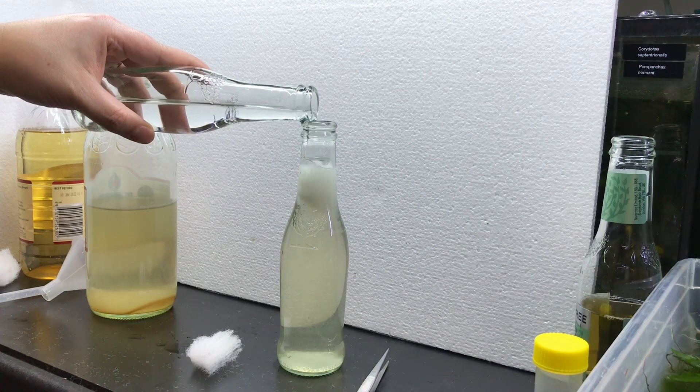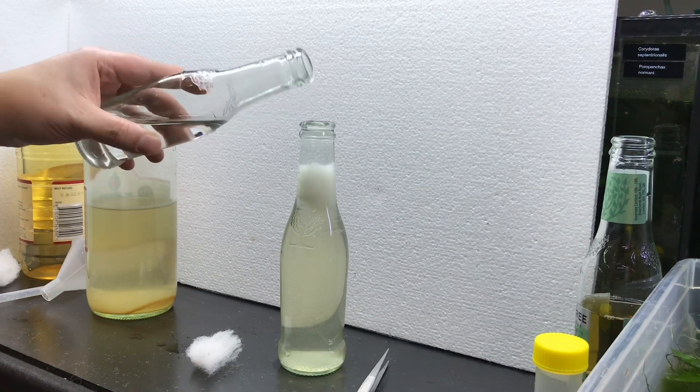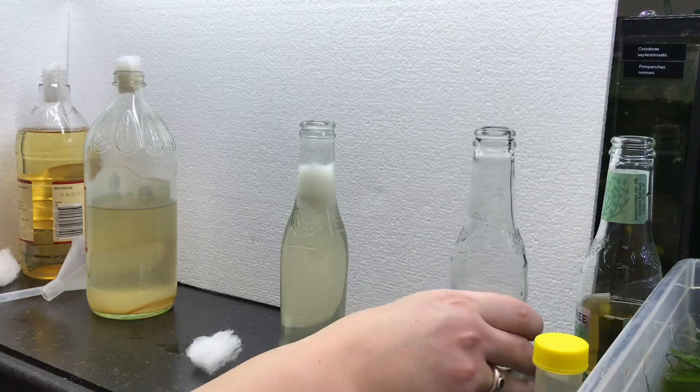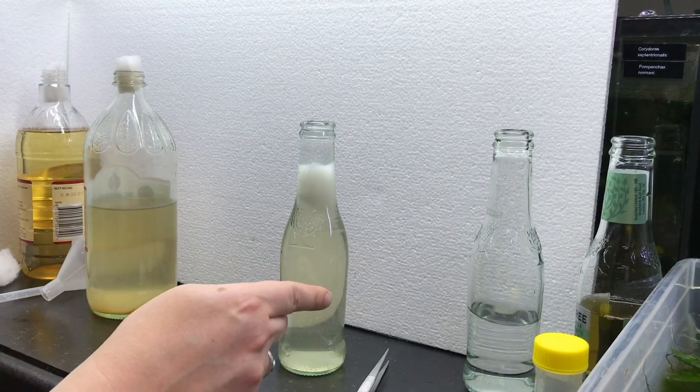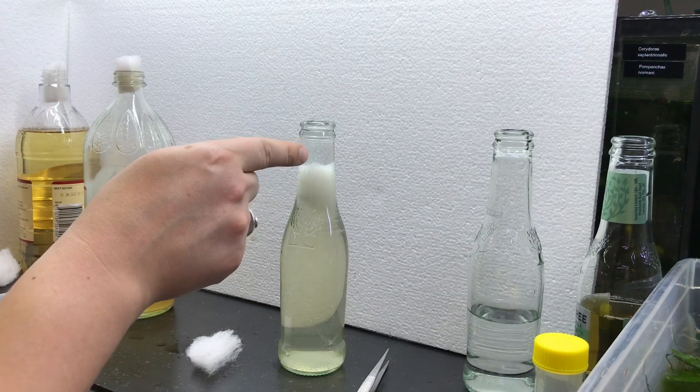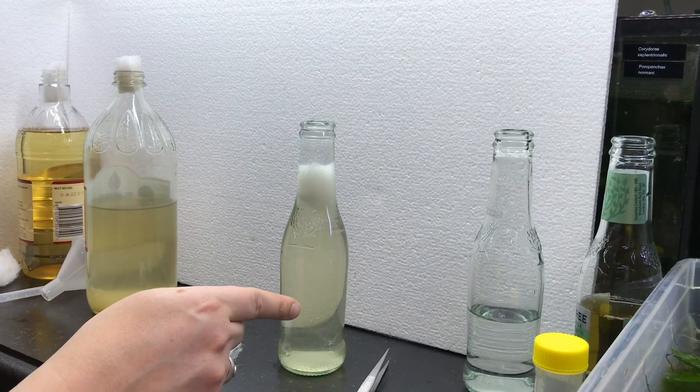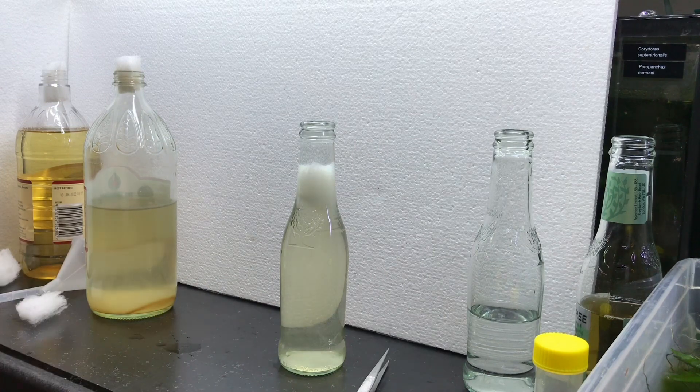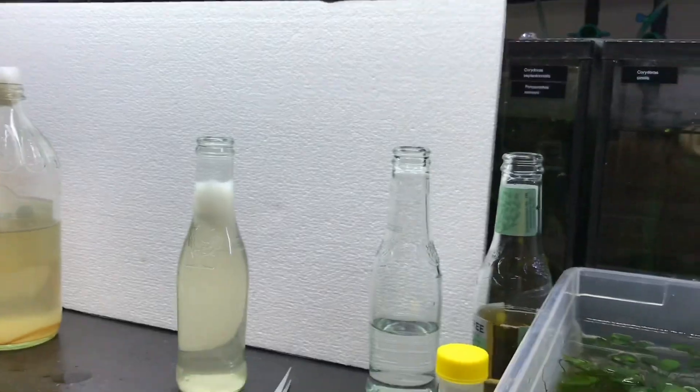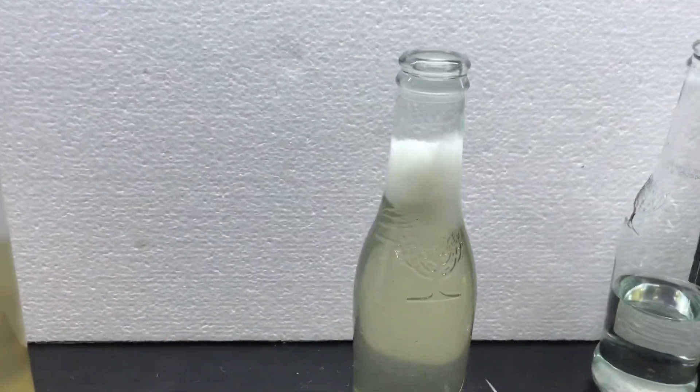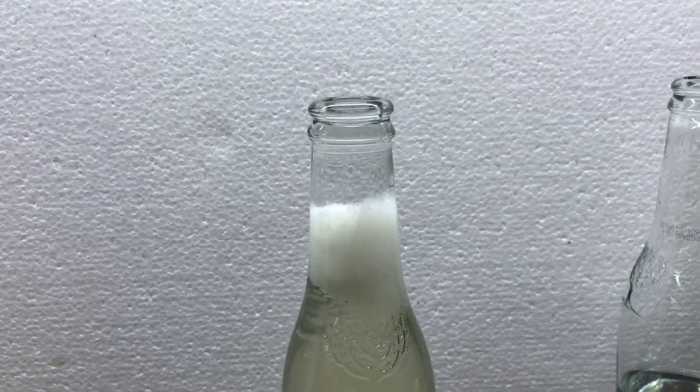And what's going to happen is filter wool is actually going to keep or severely reduce the mixing of the vinegar solution underneath and the water at the top. Over time the vinegar eels, because they like to swim to the surface, they will crawl through the filter wool and start going into the aged water part of the bottle.